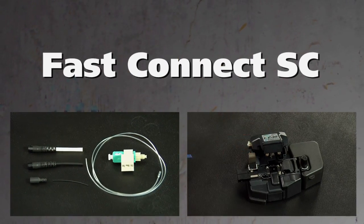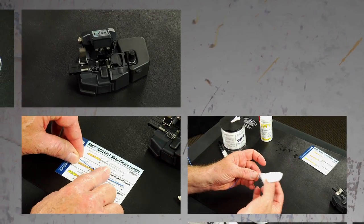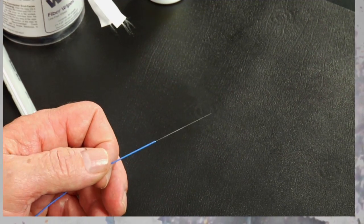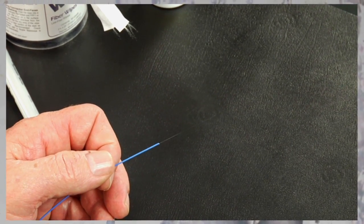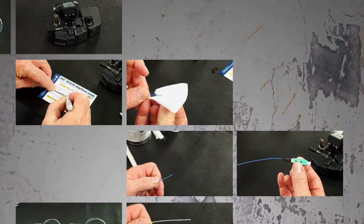Fast Connectors. AFL's fast connectors are pre-polished field installable connectors that eliminate the need for hand polishing in the field. Precision mechanical alignment ensures low loss with a proprietary gel.